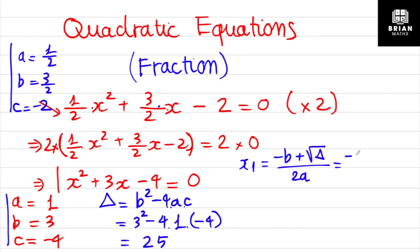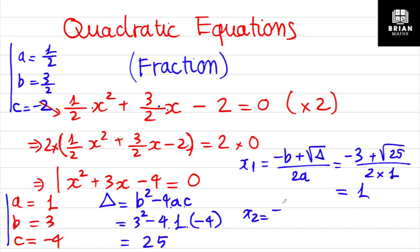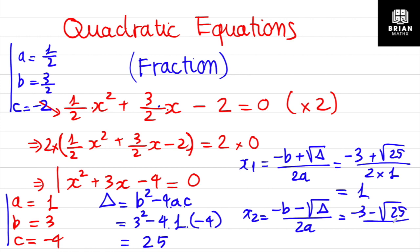For x₁, we apply the formula: negative b plus the square root of the discriminant, divided by 2a. That gives us negative 3 plus √25 divided by 2 times 1, which equals 1. For x₂, we change the plus to a minus: negative 3 minus √25 divided by 2, which gives negative 4. So x₁ = 1 and x₂ = negative 4.